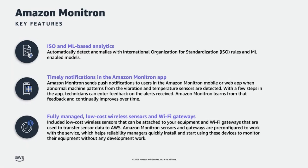Monitron also uses ML-enabled models to determine abnormal patterns in the vibration and temperature parameters. Secondly, Monitron provides timely notifications. These timely notifications in the Amazon Monitron app provide additional value for the end user personas — the reliability manager and the shop floor technician. Amazon Monitron sends push notifications to users when abnormal machine patterns from the vibration and temperature sensors are detected. With a few steps in the app, technicians can enter feedback on the alerts received, and Monitron learns from the feedback and continuously improves the ML models over time.